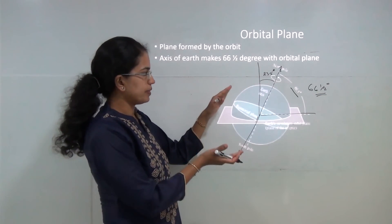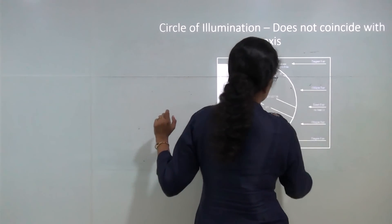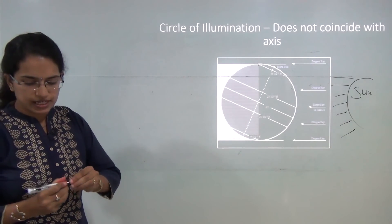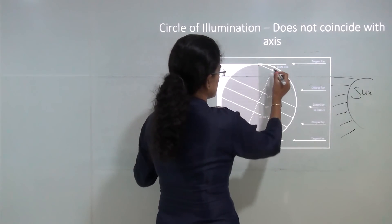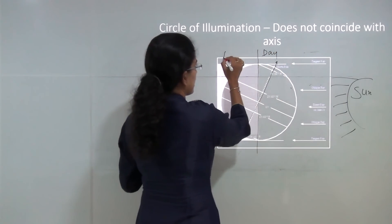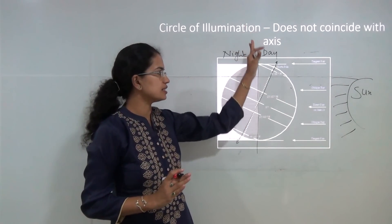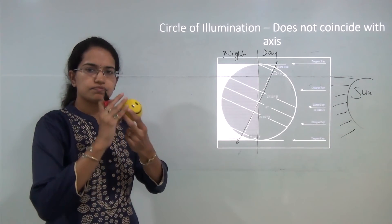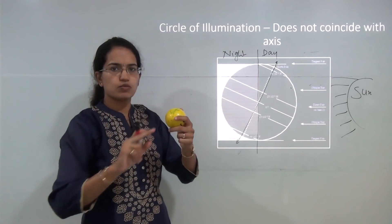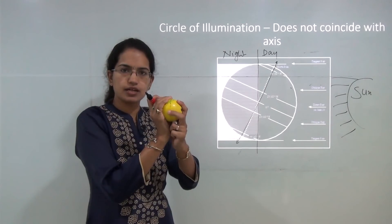Now the next important concept is the circle of illumination. When sun rays are falling on the earth, considering the tilt of the earth, one half region would have day and the other half would have night. The line which divides the earth into day and night is called the circle of illumination. If you cut the earth around the center you get two hemispheres with a circular boundary — that is the circle of illumination. Beyond this line, one side is day and the other is night.